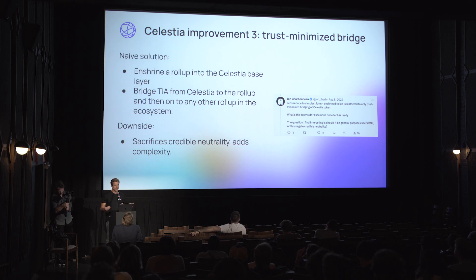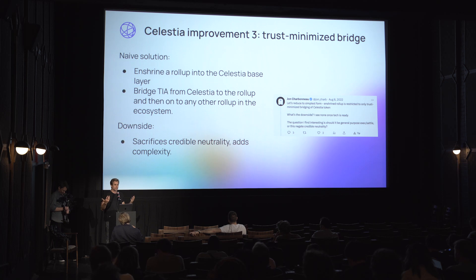A naive solution — shout out to John — is to enshrine a specific rollup into the Celestia protocol, so you could bridge TIA into that rollup and that rollup can bridge into the rest of the ecosystem. The downsides aren't that many if you design it right, but it could have some complexity or an undesirable amount of state and execution to support. The really big issue is that it compromises credible neutrality, which is a major design goal of Celestia. We want to make sure we're not favoring any specific protocol — we're just a data availability layer and don't want to start doing settlement or launching our own rollups.